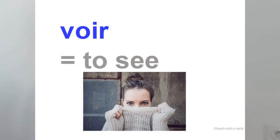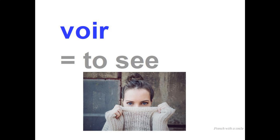You have the nouns, you have the adjectives, and you know how to put them in the masculine, feminine, singular, plural. Now what's missing? The verb. We need a verb to create a sentence: subject, verb, and then a noun and adjective. We are going to start with the verb 'to see': voir. To see — voir. Together: voir. Voir is the infinitive.